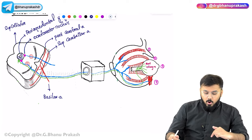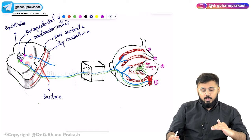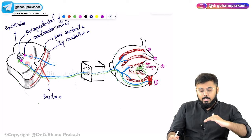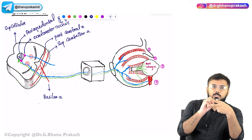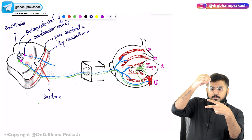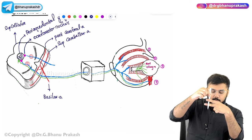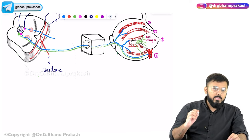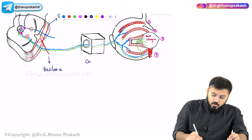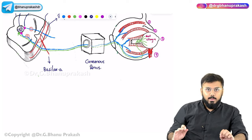The oculomotor nerve passes below the posterior cerebral artery and above the superior cerebellar artery, running between these two vessels. It then travels to enter the cavernous sinus — specifically on the lateral wall of the cavernous sinus — and then proceeds into the orbit.